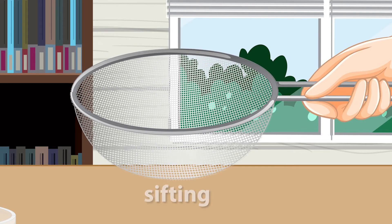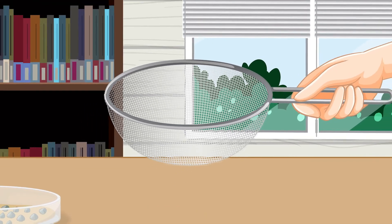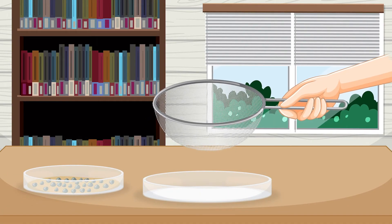The process of separating a mixture of solids using a sieve is called sifting. Sifting allows us to quickly and efficiently separate materials based on the size of their particles.